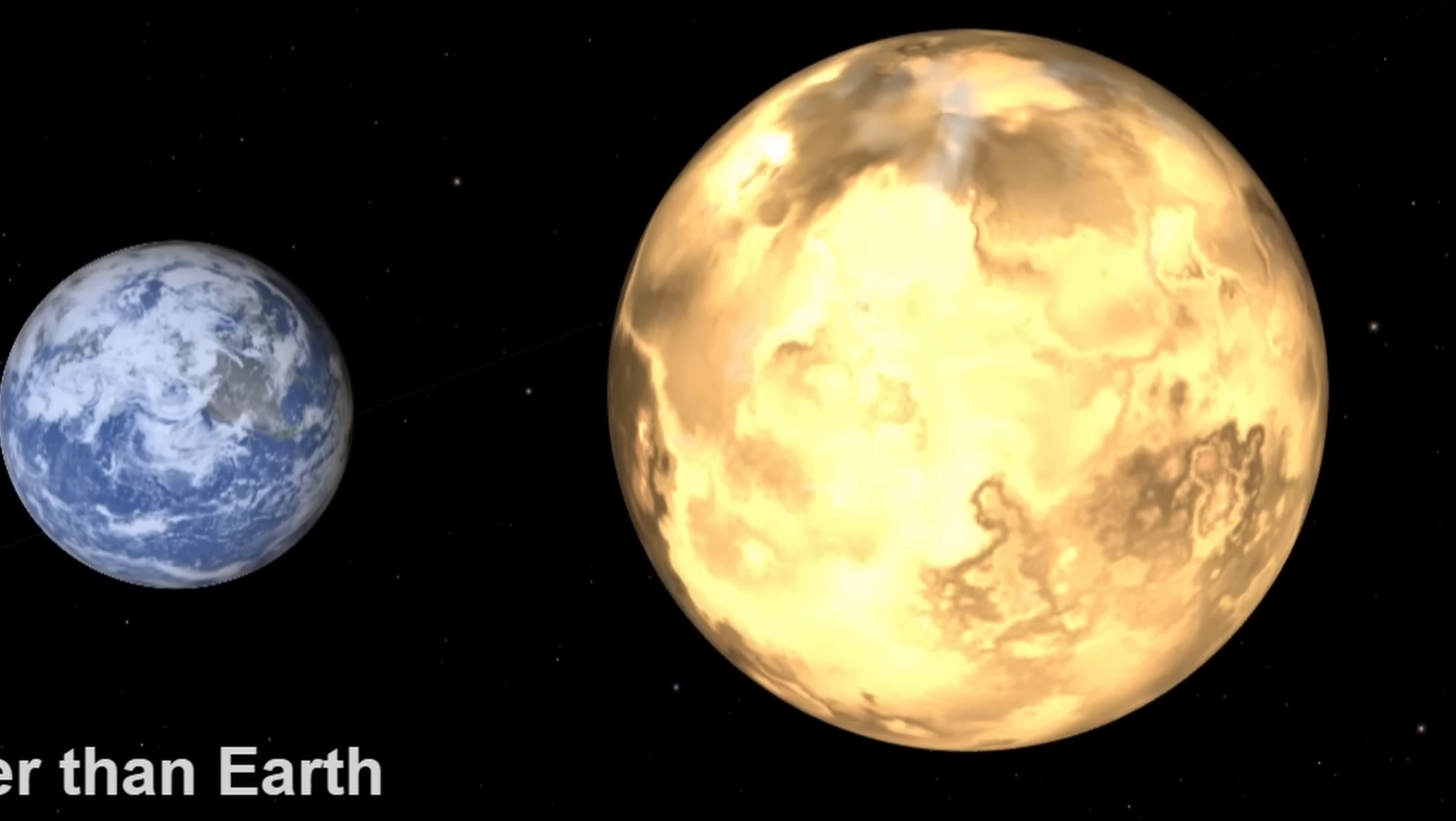Now we obviously have no idea how it resumed this orbit, but very likely because of the interaction with something else in the star system that changed its orbit so much. And so if this planet is terrestrial, it might resemble something like this.